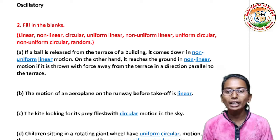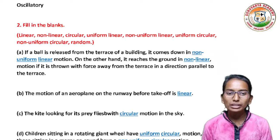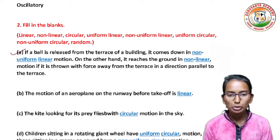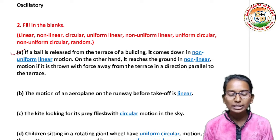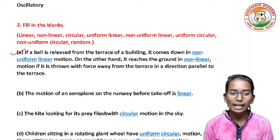If a ball is released from the terrace of a building, it comes down in non-uniform linear motion. On the other hand, if it is thrown with force away from the terrace in a direction parallel to the terrace, it reaches the ground in non-linear motion.